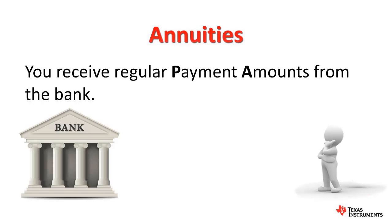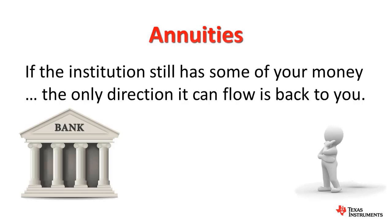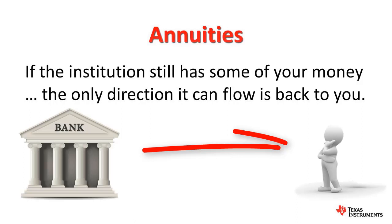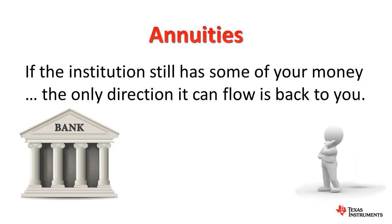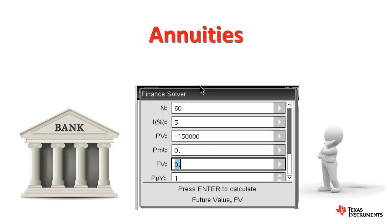Now press the tab key to navigate down to the future value. The problem tells us that at the end of 10 years, the bank will still have $60,000 of Amy's money. We can call this the future value, or in some cases, final value. If the institution still has some of our money, the only direction this cash can flow is back to you — the same direction as the monthly payments and opposite to the initial cash flow. So we mark this value as positive.